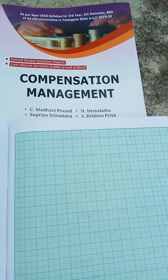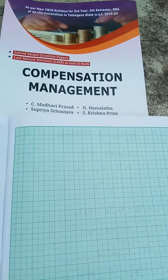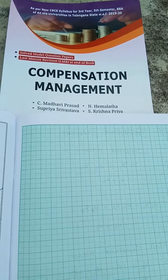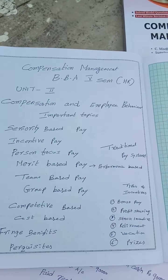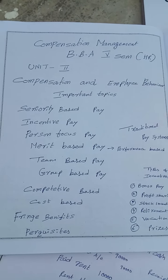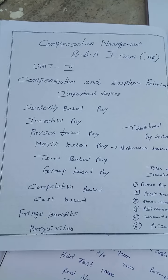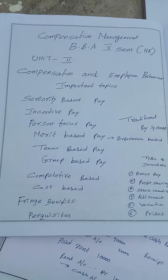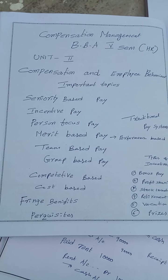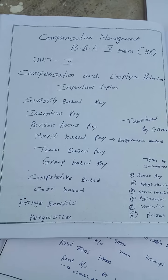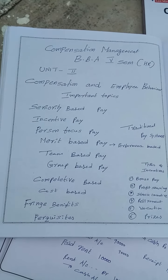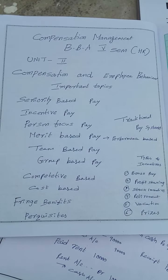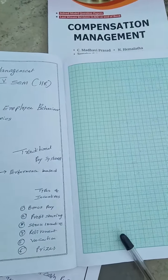My dear students, in BBA 5th semester HR, we have one subject by name Compensation Management. This is one of the main subjects in HR. The main function of HR is the fixation of compensation to the employees. Compensation means giving monetary and non-monetary benefits to the employees of the organization by the employer. Whatever was promised at the time of taking them into employment, that should be paid to them.